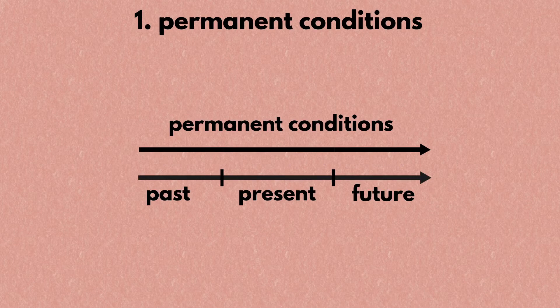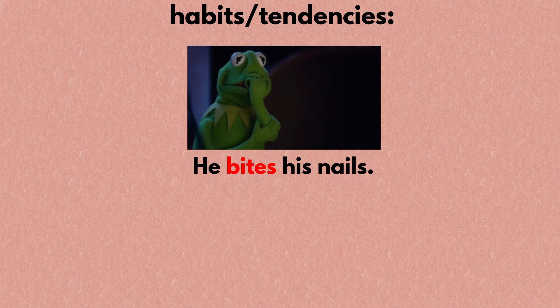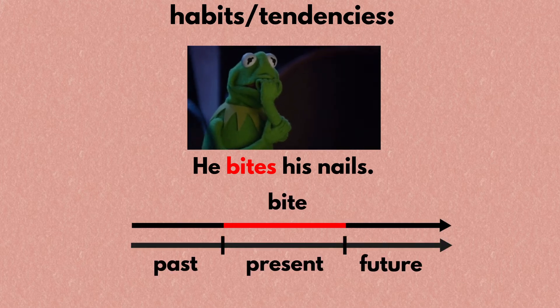The simple present tense has two different meanings. The first meaning refers to permanent conditions of someone or something — things that held true in the past, hold true now, and will hold true in the future. It's the default tense for things that cover all time zones. The first typical case is when you're talking about someone's habit or tendency, as in 'he bites his nails' — he bit his nail in the past, bites it now, and will bite it in the future.